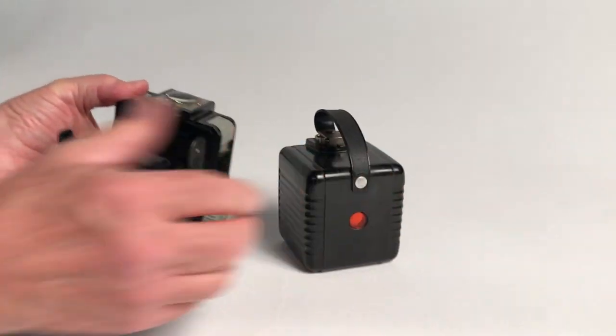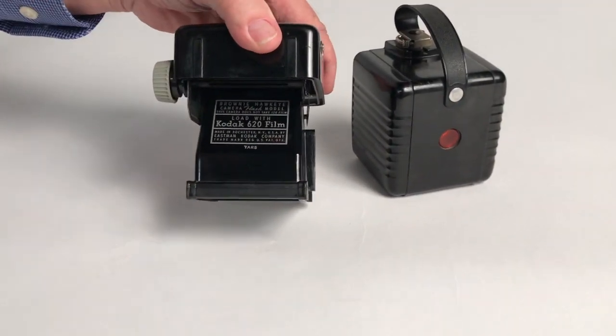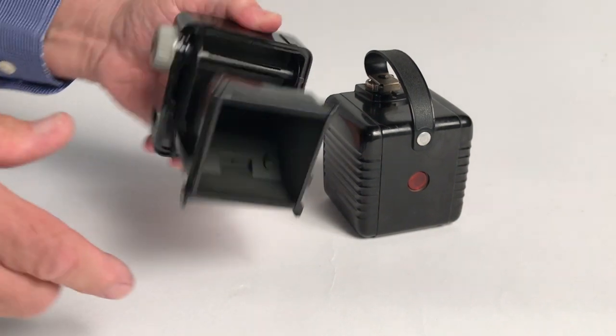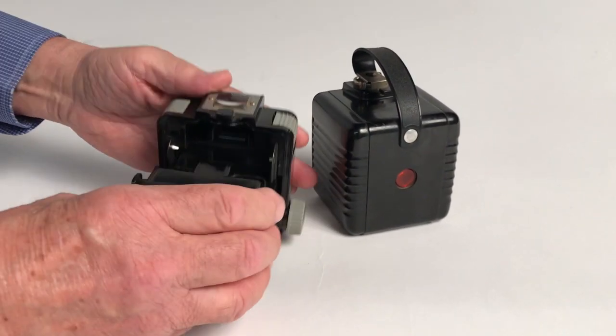The neat thing about the Kodak cameras is that it has a lot of info here. Tells you what size film it is and all their patents on it and so forth. It's kind of just basic.